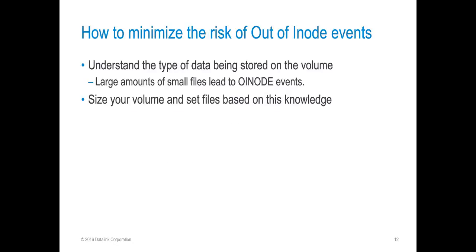So how do we minimize the risk of these types of events? Out-of-inode events are primarily caused by large amounts of small files in a single volume. Having an understanding of the type of data and sizing the volume and inode table when it's created will help to minimize these types of risks.